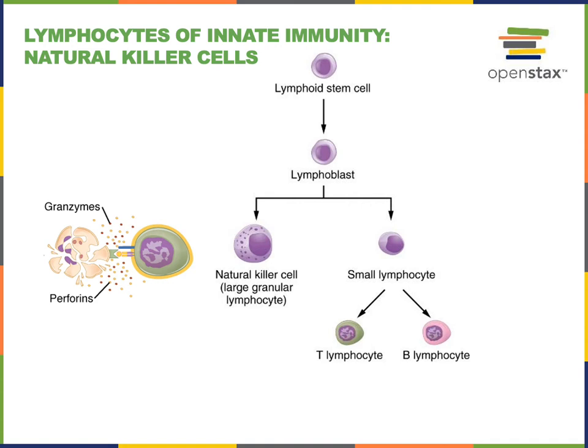A T lymphocyte would be activated by a specific antigen and be able to recognize a specific type of virus. A natural killer cell instead recognizes a molecular signal that one of our cells has become infected with a virus. The natural killer cell can then release granules full of perforins and granzymes. Perforins are proteins that punch holes in the membrane of the infected cell, and granzymes are enzymes that enter through these pores and stimulate apoptosis.